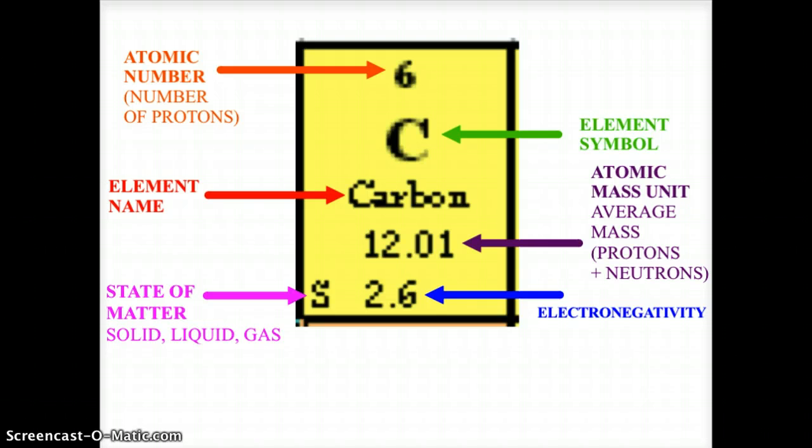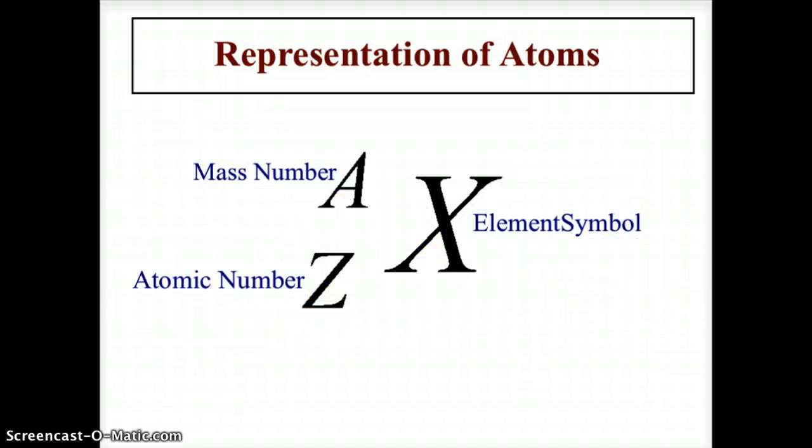Now one of the other ways that we represent atoms or elements is we put them in this symbol here, where you use the symbol as a capital letter, and then you have a superscript which would be the mass number, which is called the A number, and then the atomic number is referred to as the Z number.